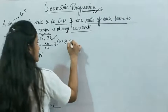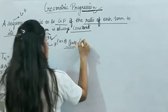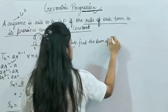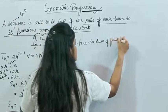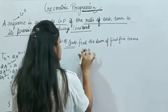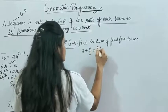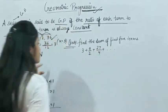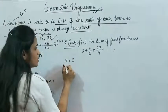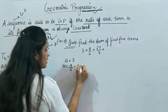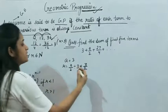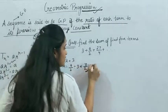Now let's do a question: find the sum of first 5 terms of a GP. Here a is equal to 3, and r is found by dividing a term by its previous term: 9/2 divided by 3 equals 3/2. So a = 3 and r = 3/2, which is greater than 1.